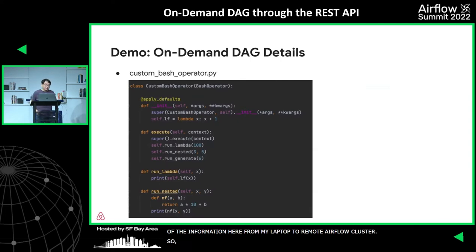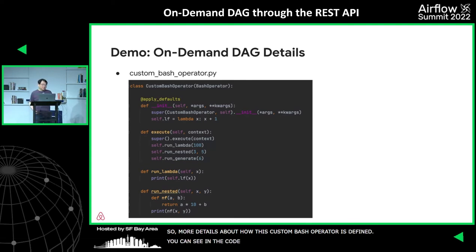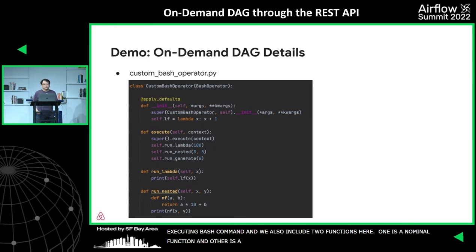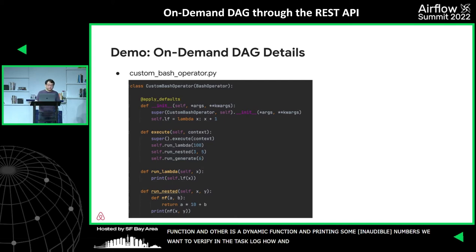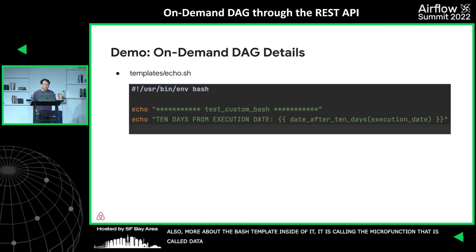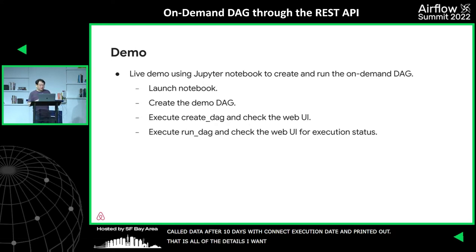More details about the custom bash operator: it extends from the bash operator. Besides executing the bash command, it includes two functions — a number function and a dynamic function — both printing some dummy numbers so we can verify in the task log that they work. Inside the bash template, it calls a macro function called date_after_10_days with the current execution date and prints it out. As a complete DAG, we need to send all this information from my laptop to the remote Airflow cluster.